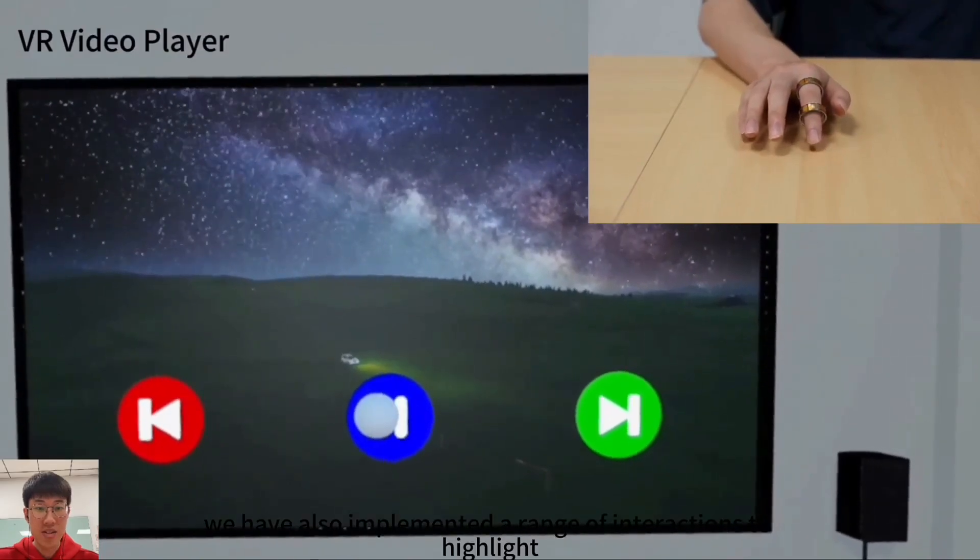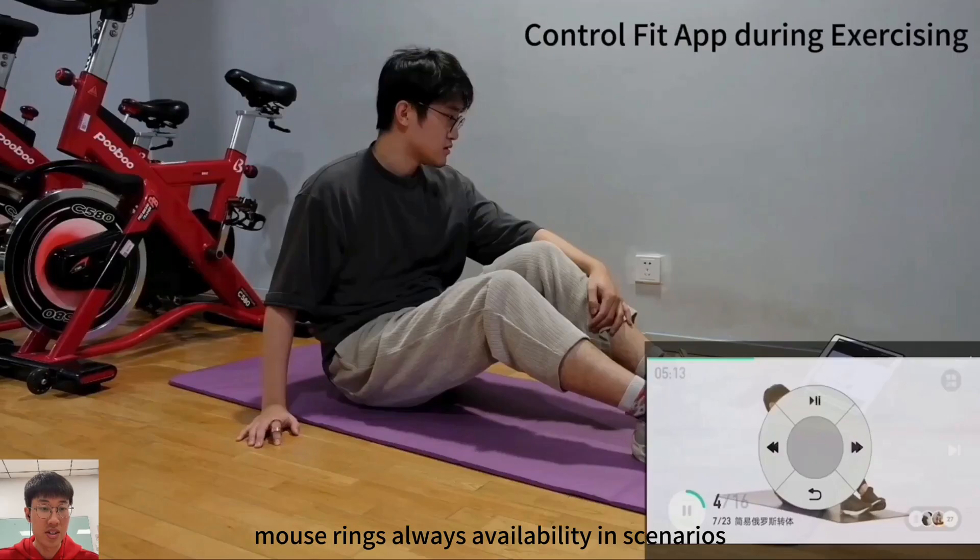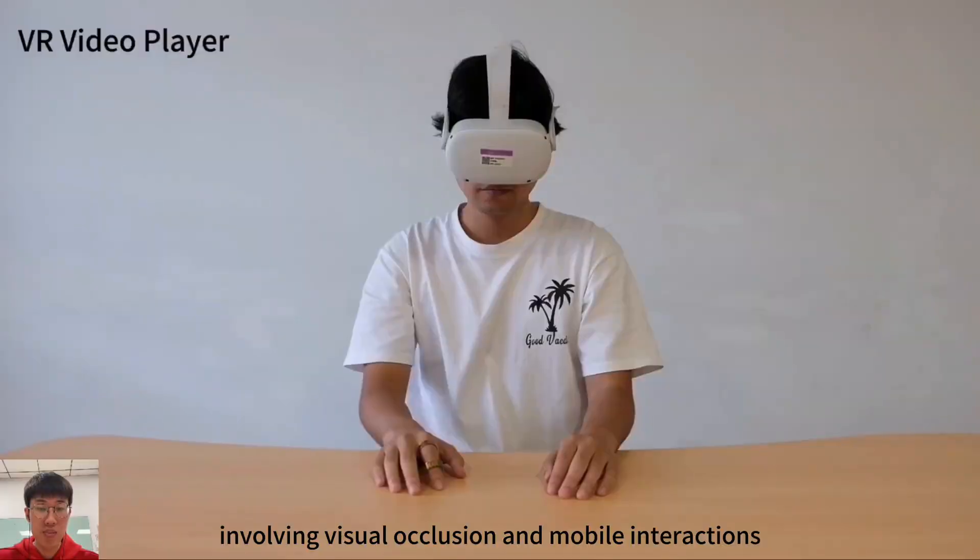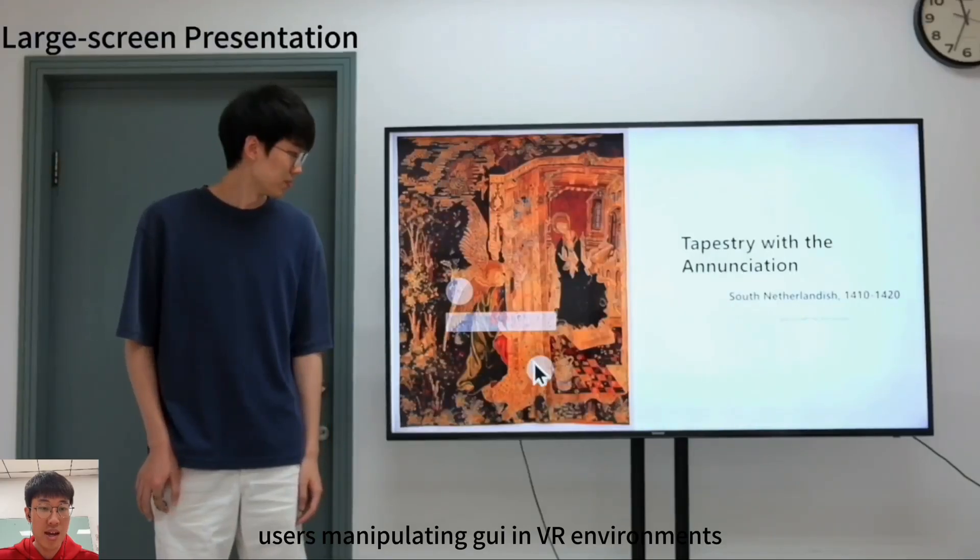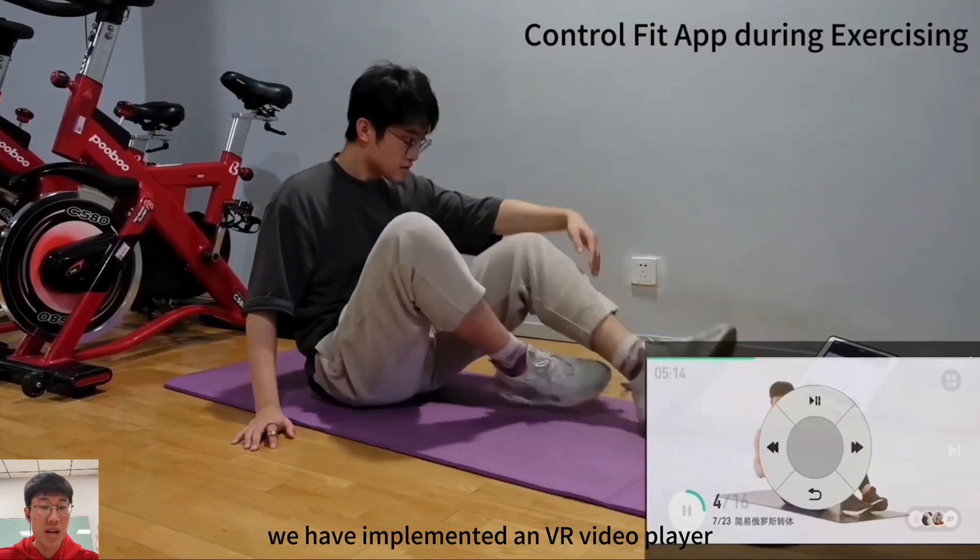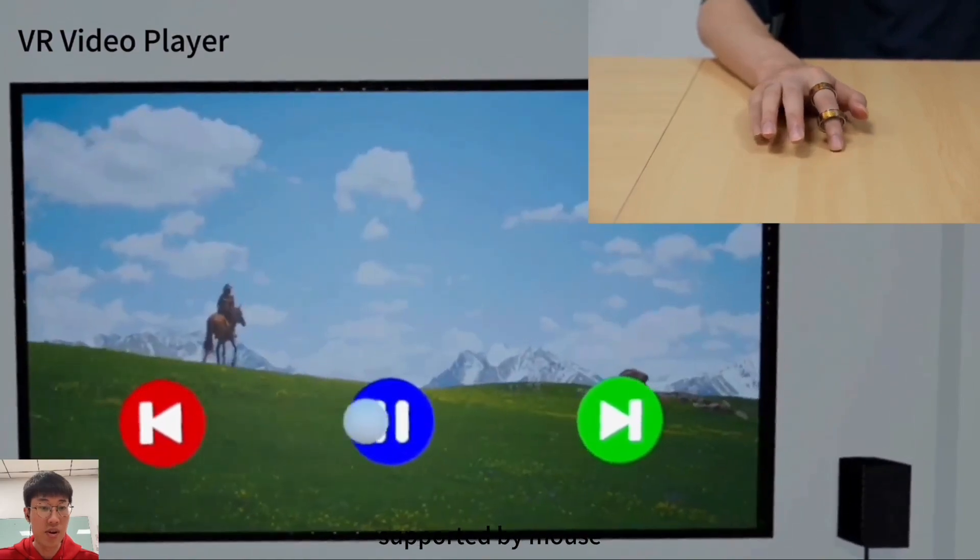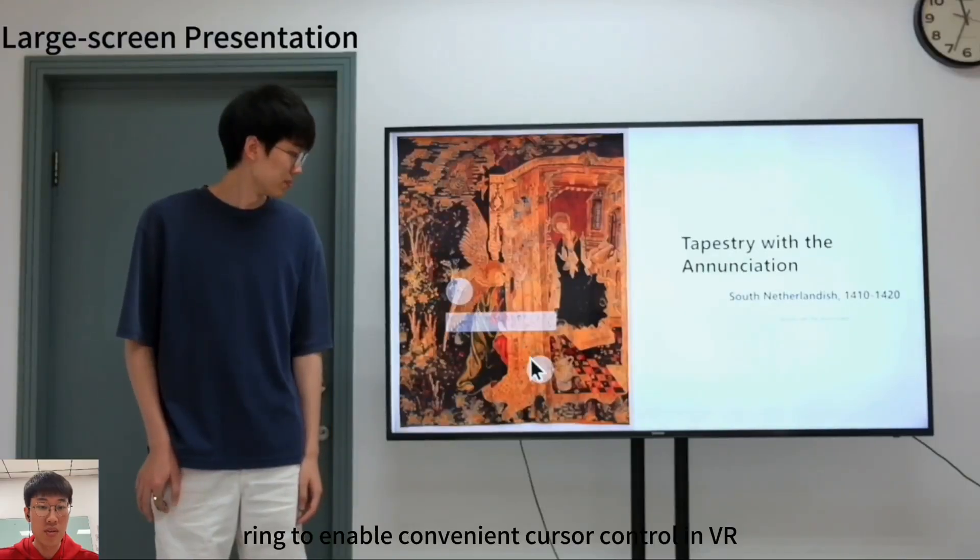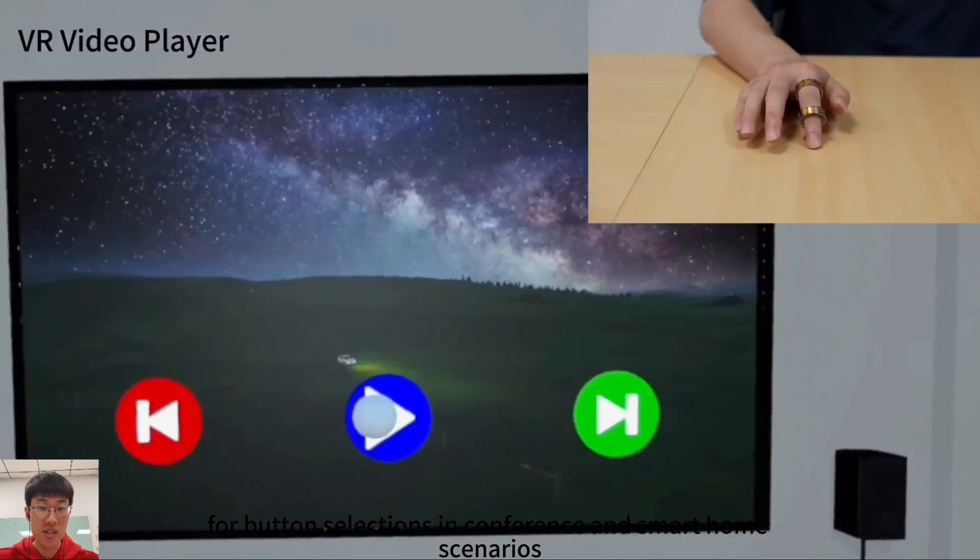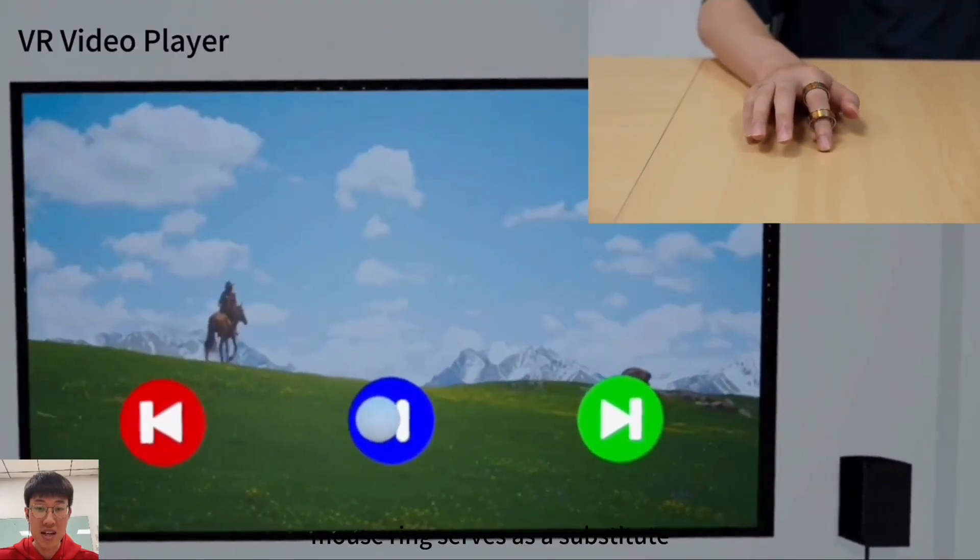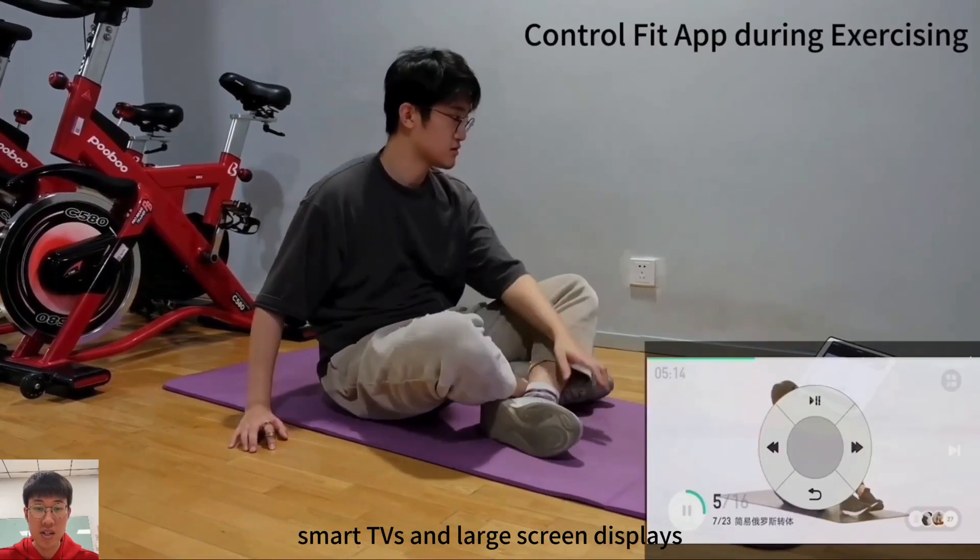We have also implemented a range of interactions to highlight MouseRing's always availability. In scenarios involving visual occlusion and mobile interactions, MouseRing facilitates users manipulating GUI in VR environments. We have implemented a VR video player. It utilizes touchpad interaction supported by MouseRing to enable convenient cursor control in VR for button selections. In conference and smart home scenarios, MouseRing serves as a substitute for remote controllers and air mouse to control projectors, smart TVs, and large screen displays efficiently.